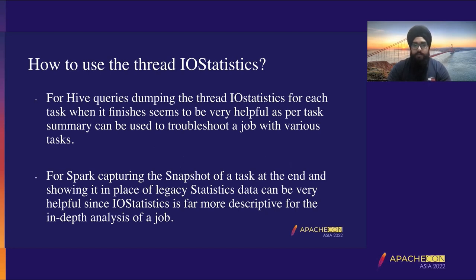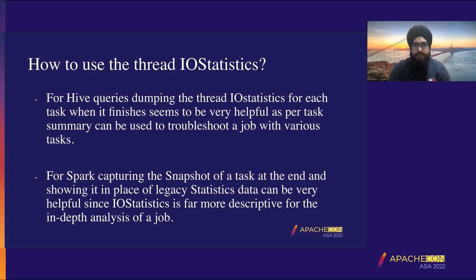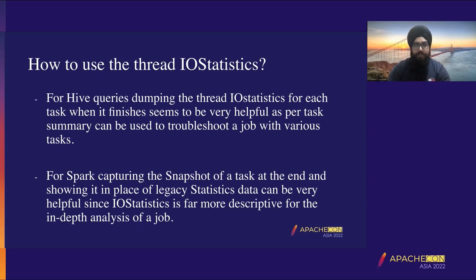How to use thread-level IOStatistics — currently we are working in Hive, Spark, and S3 committers for usages. For Hive, it's pretty simple: for queries that use these streams of the file system or S3 committers, thread-level IOStatistics is already set up. Hive just needs to dump them at the end of each task. This gives us a lot of logs where we can grab each thread and see the task summary — a good picture of each worker thread's work for troubleshooting.